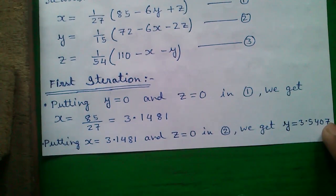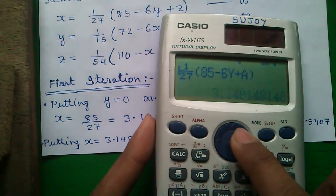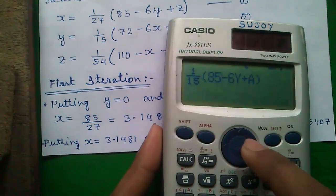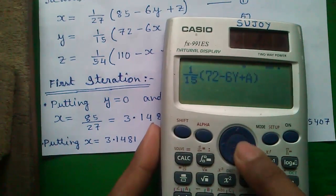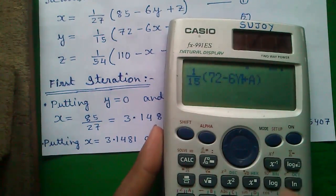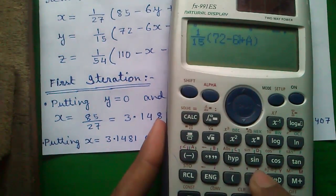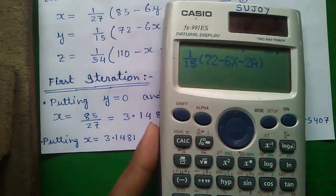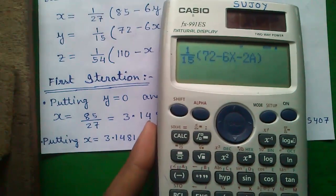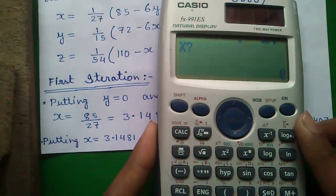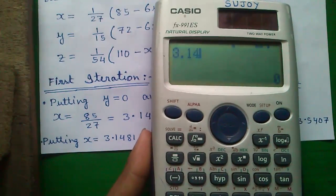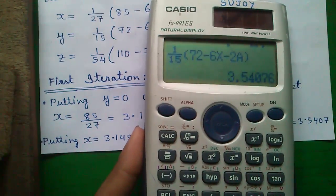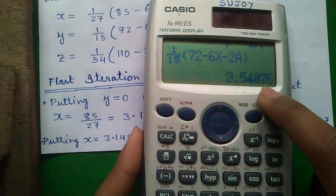Enter y as 0 and a or z as 0 and press equals to. You will get 85 by 27. Press s to d button to get the fraction form 3.1481. Similarly putting x equals 3.1481, our current x value, and z equals 0 in equation 2, we will get y equals 3.5407. To do that simply replace the values.